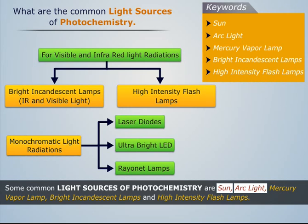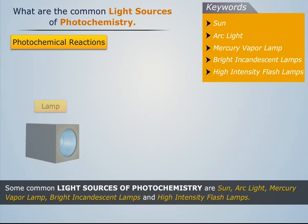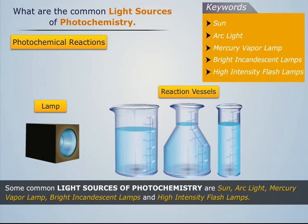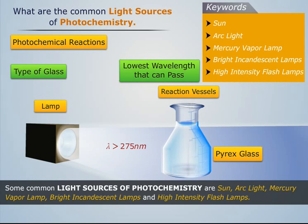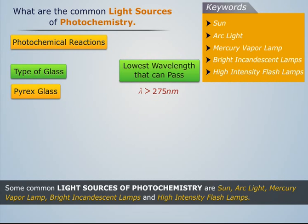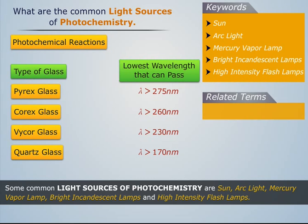Some common light sources of photochemistry are: sun, arc light, mercury vapor lamp, bright incandescent lamps, and high intensity flash lamps. In photochemical reactions, lamps and reaction vessels made from glass are used. It should be noted that the glass type being used must be transparent to the desired wavelength range. For instance, if the reaction vessel is constructed using Pyrex glass, then only wavelengths greater than 275 nanometers will be allowed to pass through and reach the sample. The low wavelength cutoff for some glass types are...